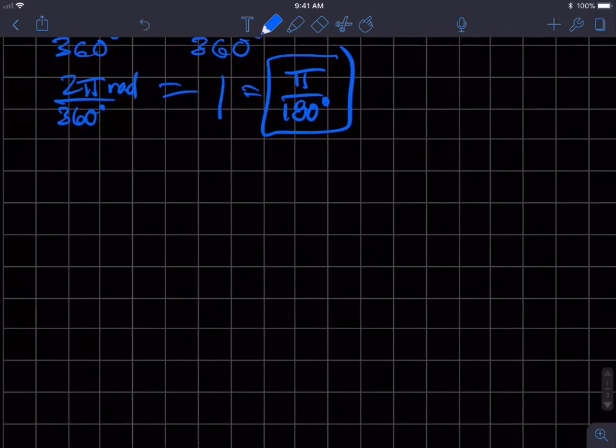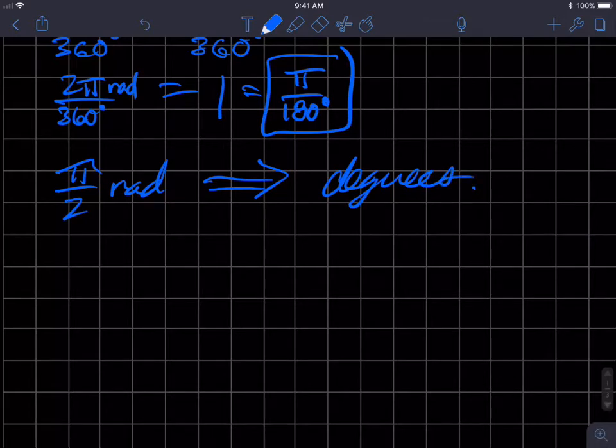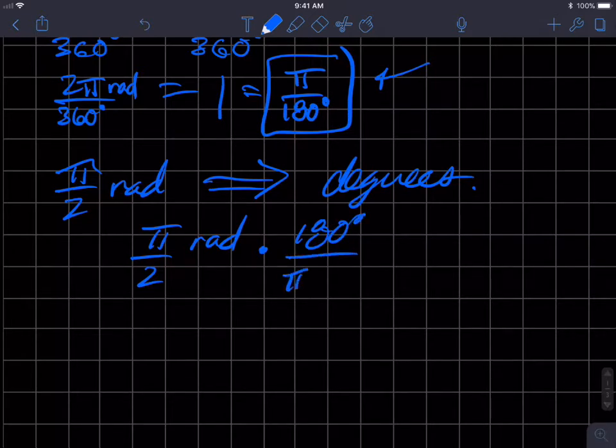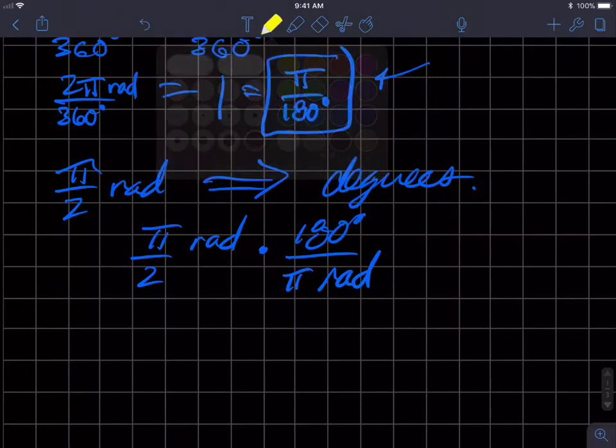So if I tell you that you have π over 2 radians, and I want you to convert that to some measure in degrees, you can do this: π over 2 radians. Those are my units. And I can multiply that by this conversion ratio, which is 180 degrees divided by π radians. And notice how the radians in the numerator, radians in the denominator, they equal 1.